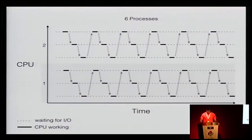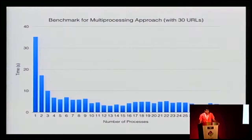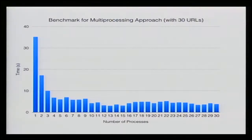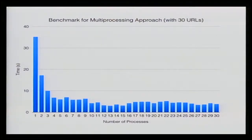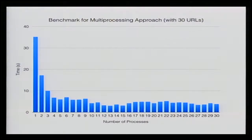With more processes you get much more work done across more cores. The performance is very similar to threading in how it reduces time. However, with just one process it takes longer than both sequential and threading because the overhead of creating a process is much greater. Still, you get a healthy drop as you add more. After a certain point with 30 URLs it's diminishing returns.